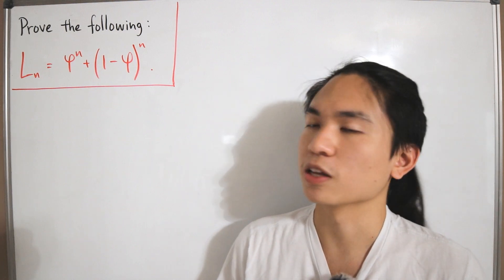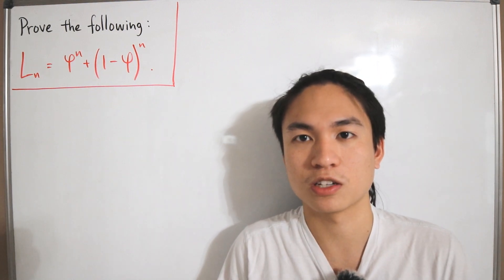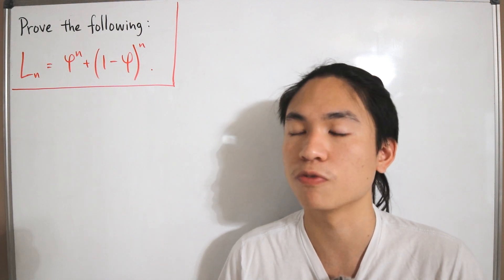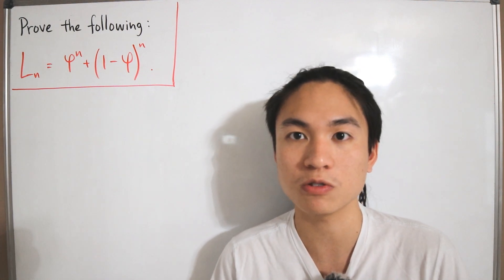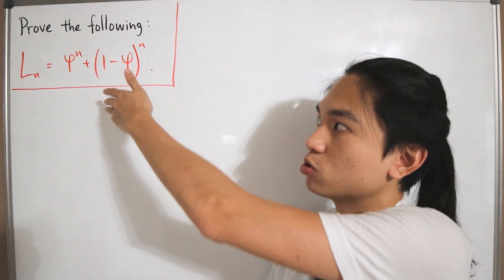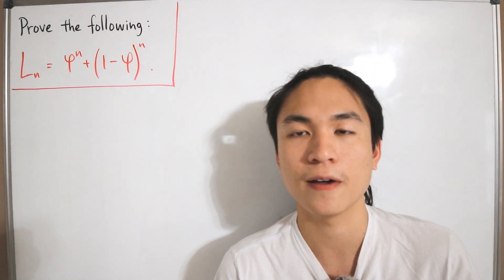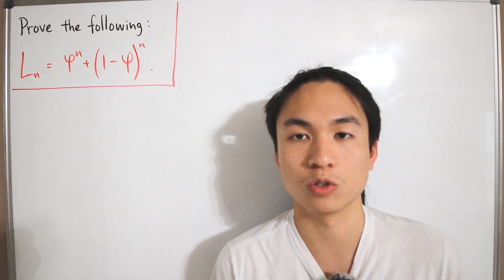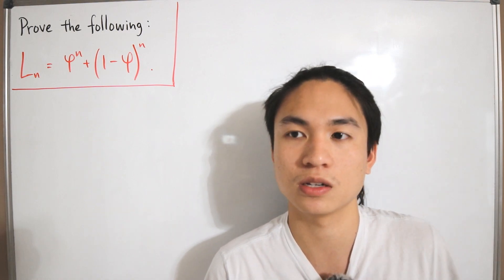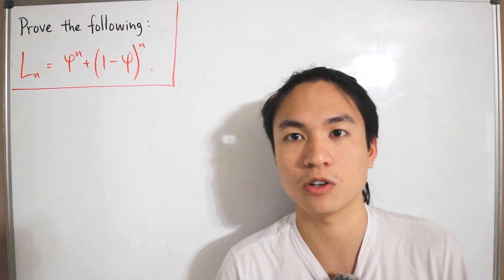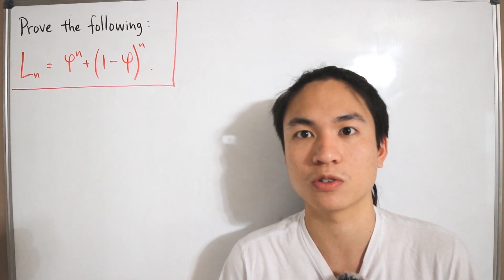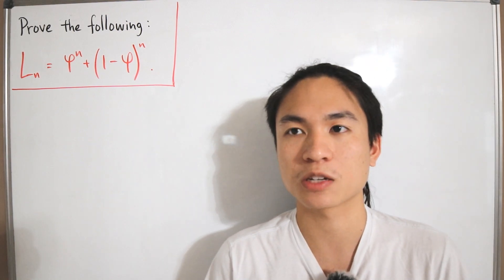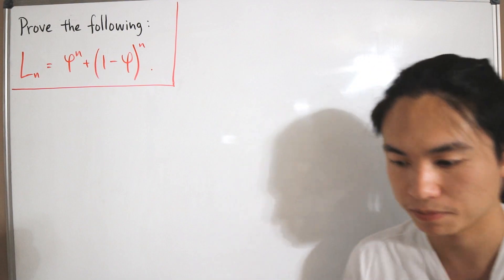I want to start with the definition of Lucas numbers, since this may be new to many viewers. We'll prove some recurrence relation identities that will help us prove the formula, and work our way from there. Some of these recurrence relations were also used in verifying Binet's formula for Fibonacci numbers.